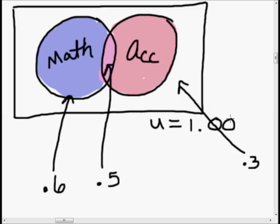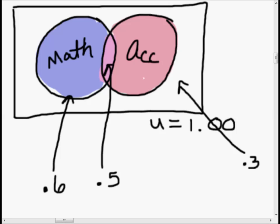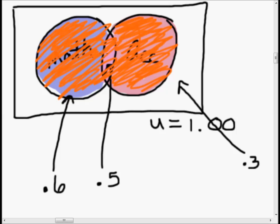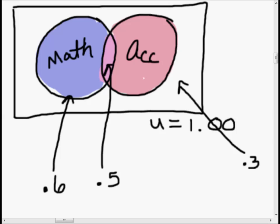Let's figure out what we need. What we need is the chance that she goes to at least one class — that's everything: the chance that she just goes to accounting, the chance that she just goes to math, or the chance that she goes to both. We know some stuff, but we've got to remember the overlap problem. Let's start simple.